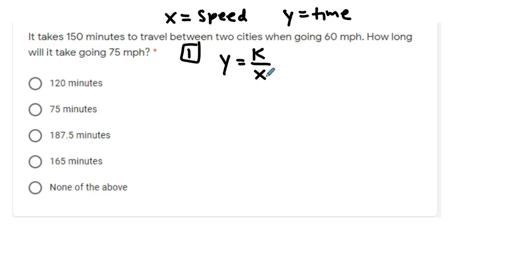You use the first scenario of 150 minutes and 60 miles per hour to solve for k. When you multiply 60 by 150 to solve for k, I believe you get 9,000.